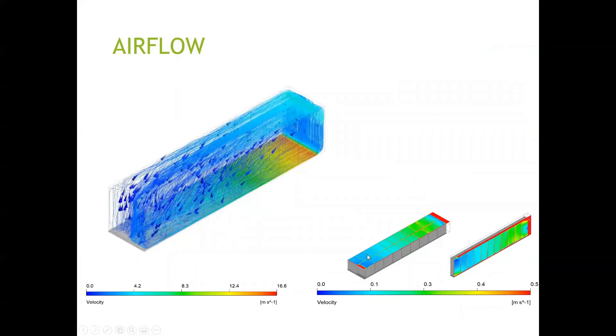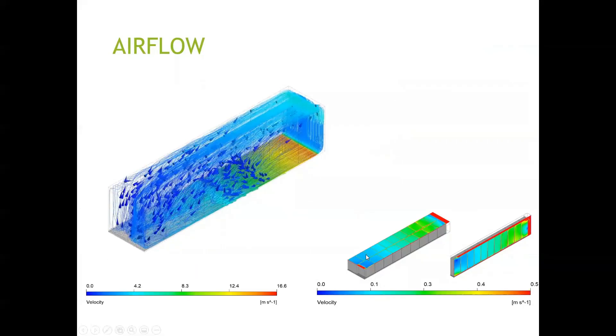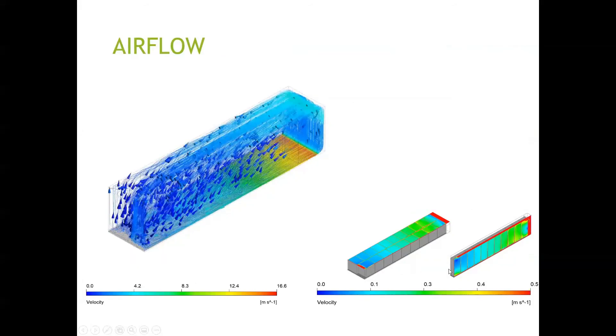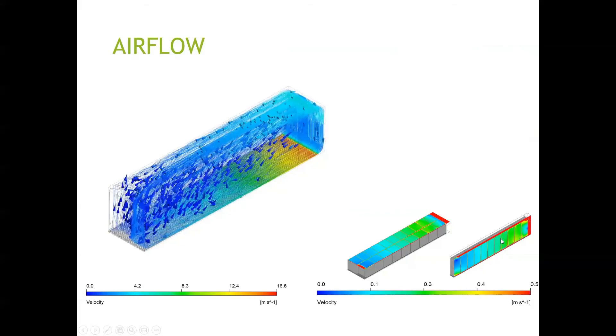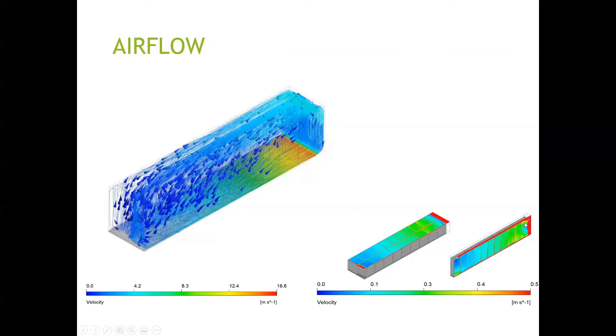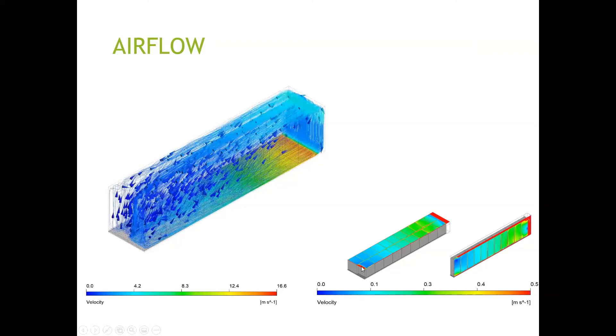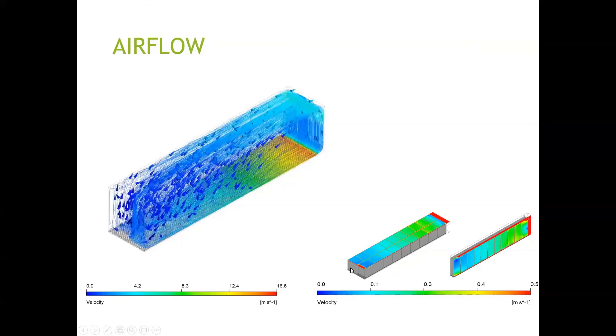And also shown here is a contour plot of air velocity on horizontal plane, bisecting the stacks and also on vertical plane bisecting one of the rows of pallets. As you see, velocity is low in a region near the door and also there is a small region at the back near the cooling unit where we have very low air velocity, that means low ventilation, velocity lower than 0.1 meter per second.